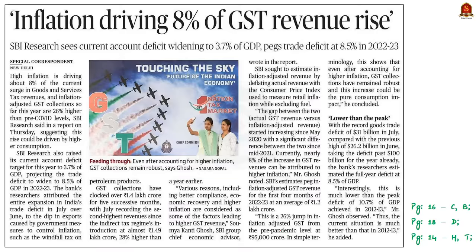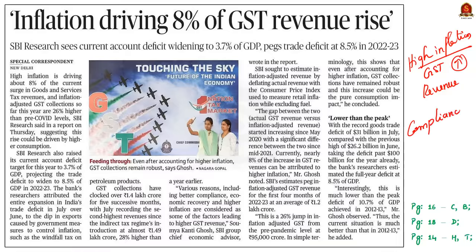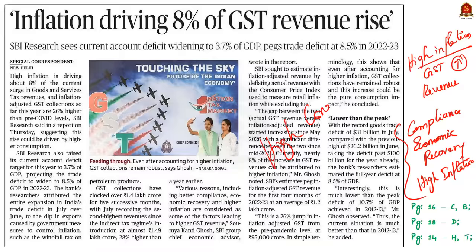This article says that high inflation is driving about 8 percent of the current surge in GST revenues. As per the article, GST collections have clocked over 1.4 lakh crore for five successive months. The reasons stated for this higher GST revenue collection include compliance, economic recovery, and higher inflation. The revenue after adjusting the inflation factor is also high, and as per the article, it is because of the increase in consumption rate after COVID. In this context, let us understand about inflation and how GST revenue increases because of inflation.